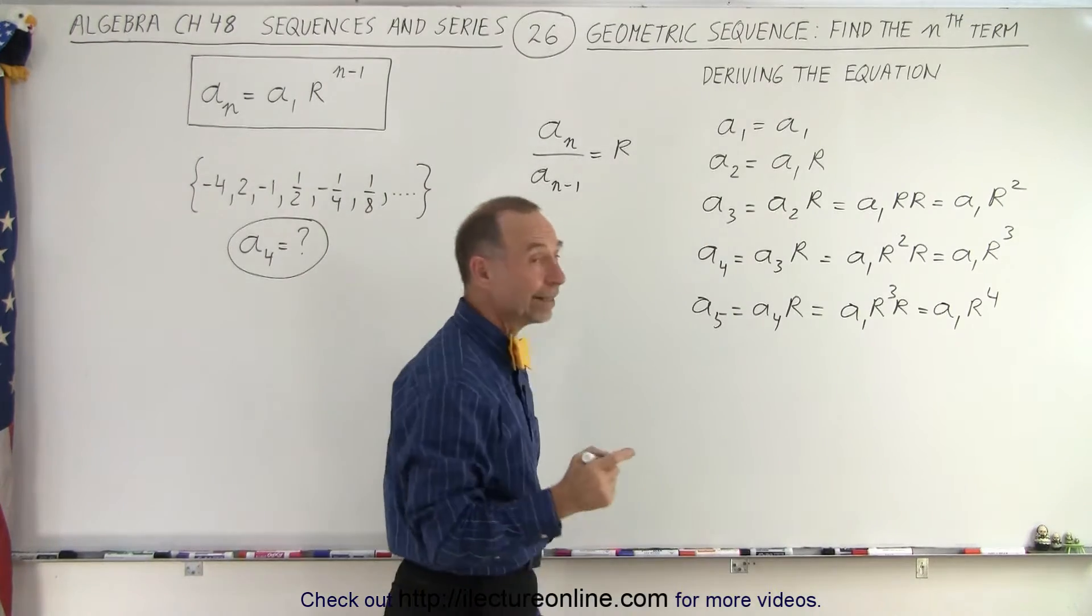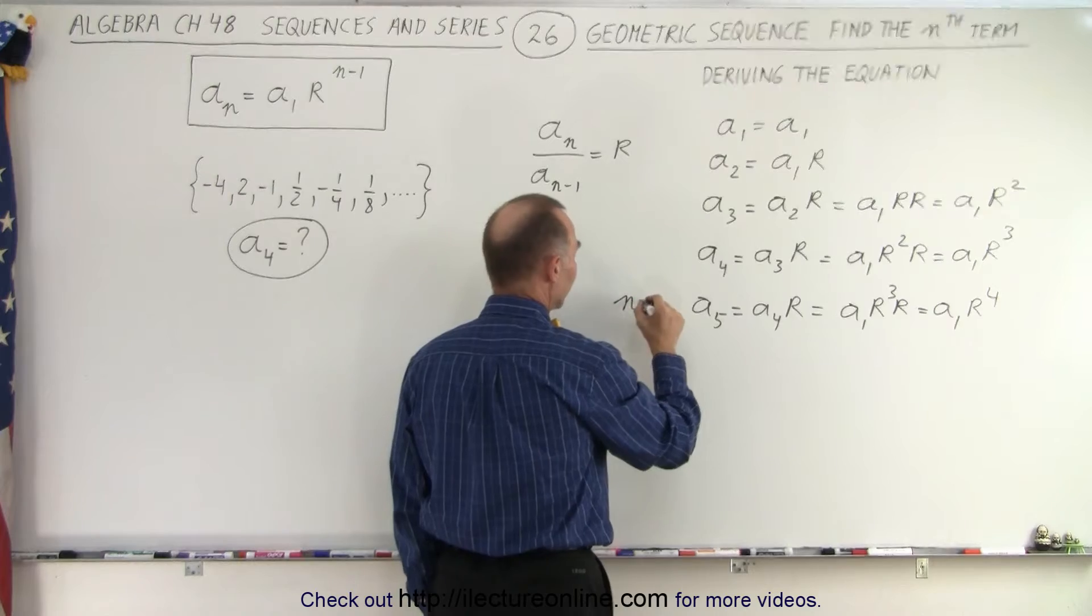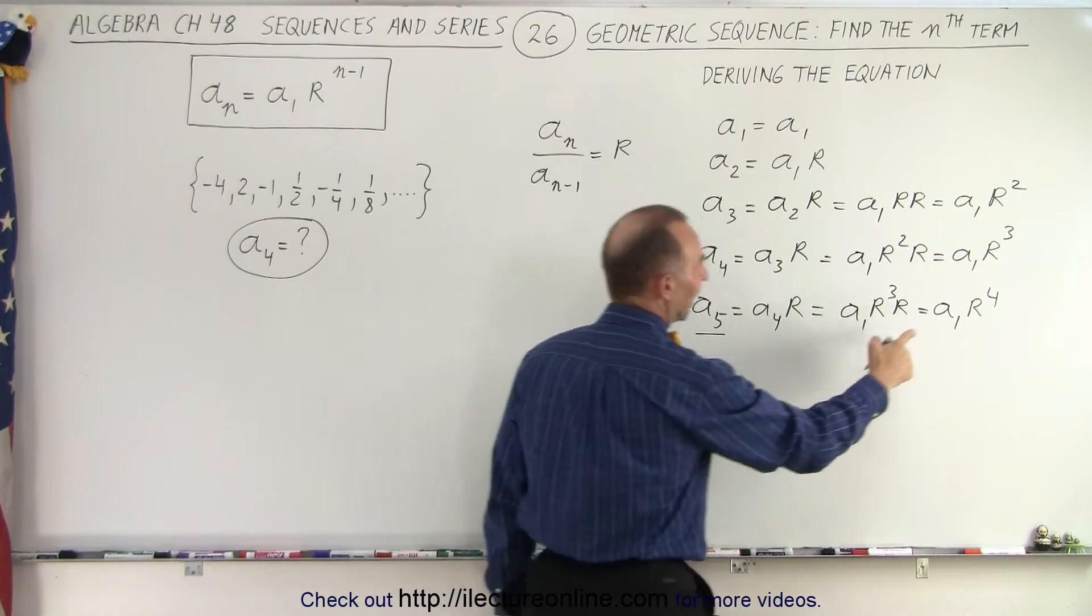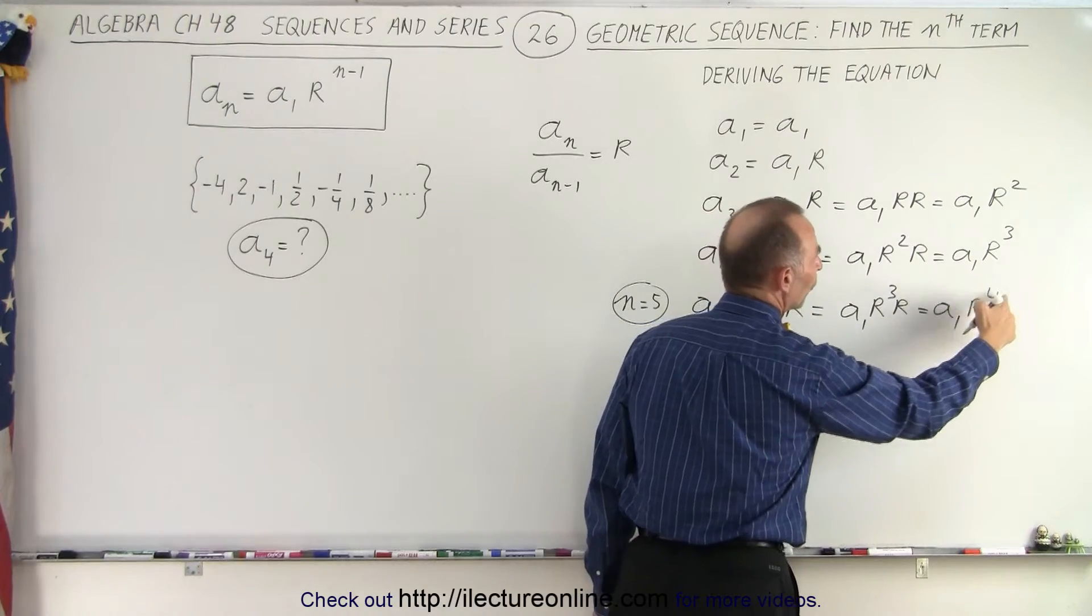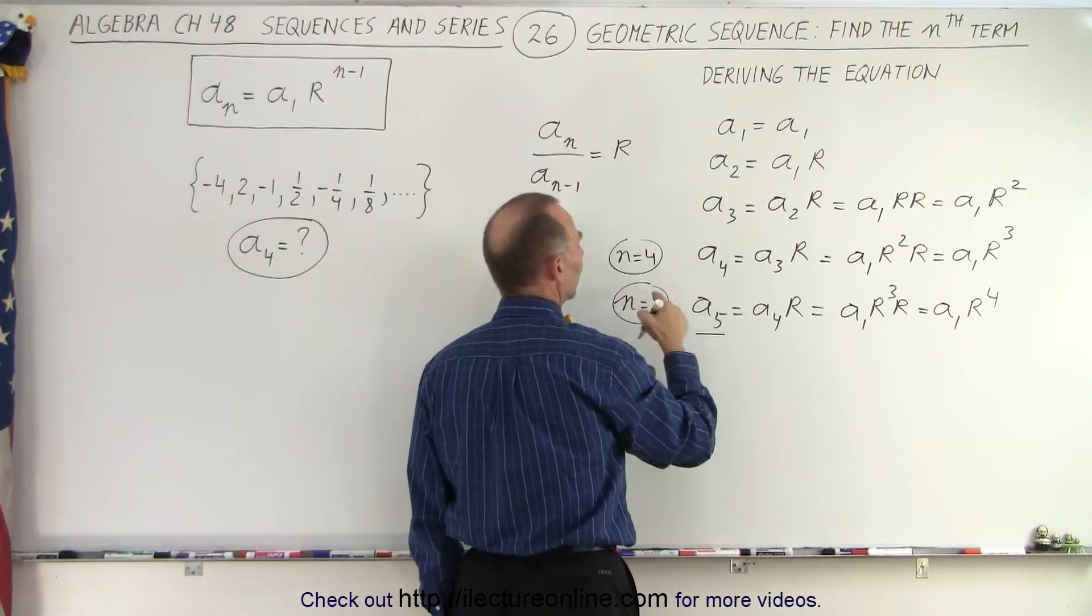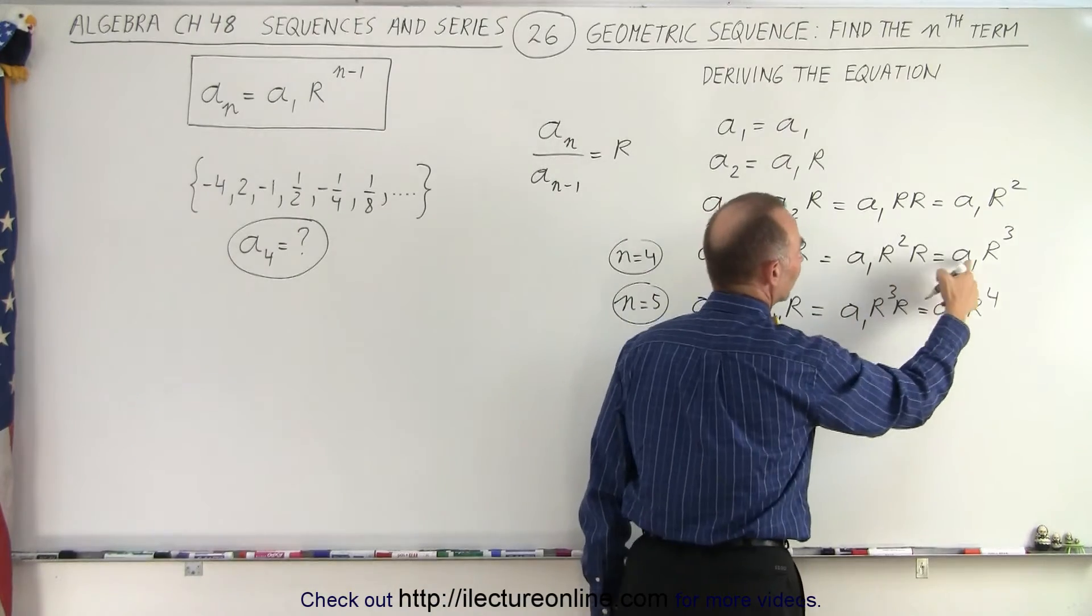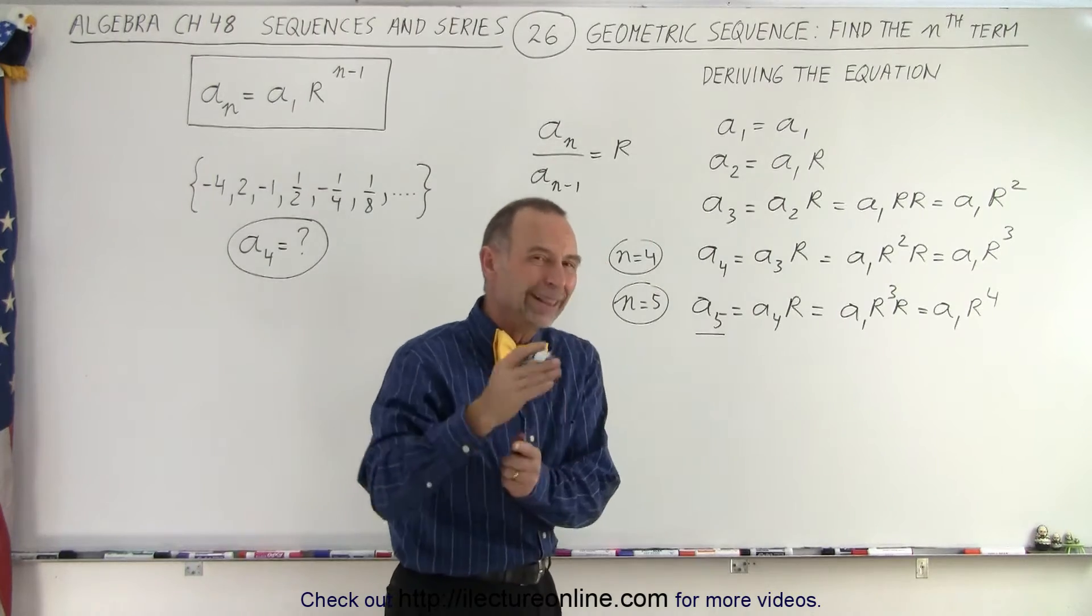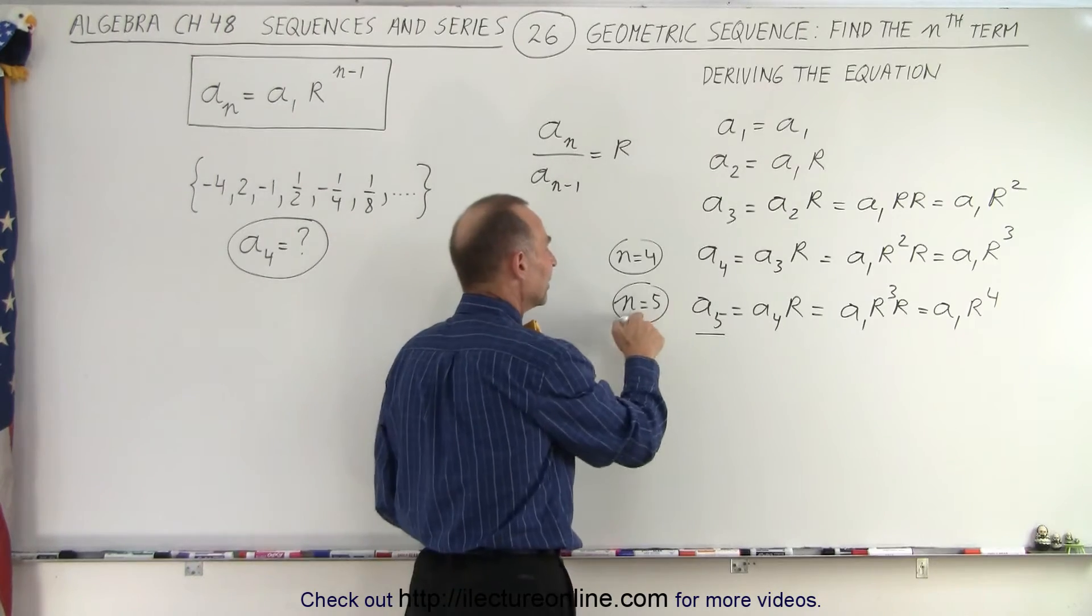Now when we take a look at it, when n is equal to 5, a_5 is a_1 times r to the fourth. When n is equal to 4, you can see that a_4 is equal to a_1 times r to the third. Notice that the exponent of the common ratio is always 1 less than the value for n.